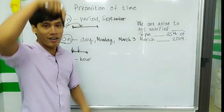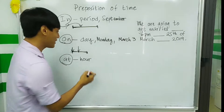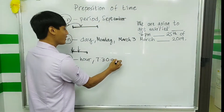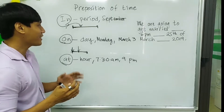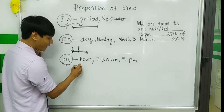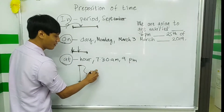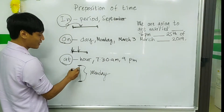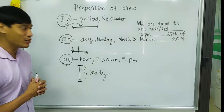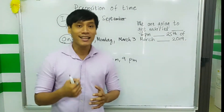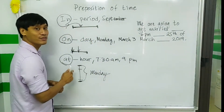So to recap: 'in' is for a period, 'on' is for one specific day. Next is 'at', which we use for time — for example, 7:30 a.m. or 9 p.m. 'At' is used within the day. For example, within Monday — at 7 a.m. You can also use it for 'at night' and 'at dawn', because those are parts of the day.